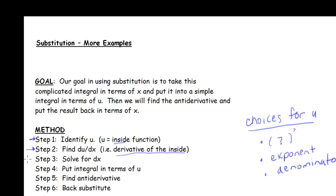Once we find du/dx, we solve for dx. Then we put the integral in terms of u and here the original variable must cancel out. Once we do that, we find the anti-derivative and then substitute back in terms of the original variable.